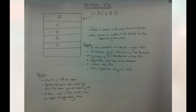In a serial file, data is stored in the order that it arrives. If we have all these different records and we put them in — A, C, E, B, D — they would go in the order that they arrive: A first, then C, then E, then B, then D. Any new data is added to the end of the file.